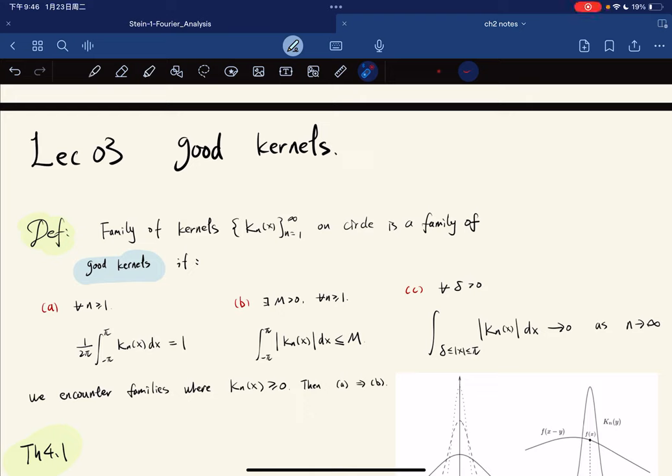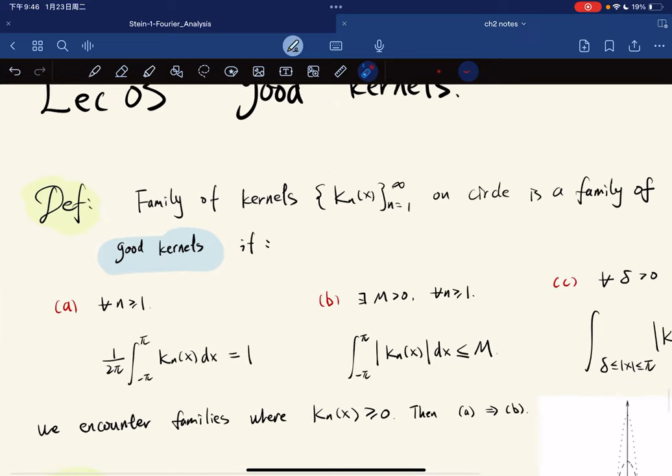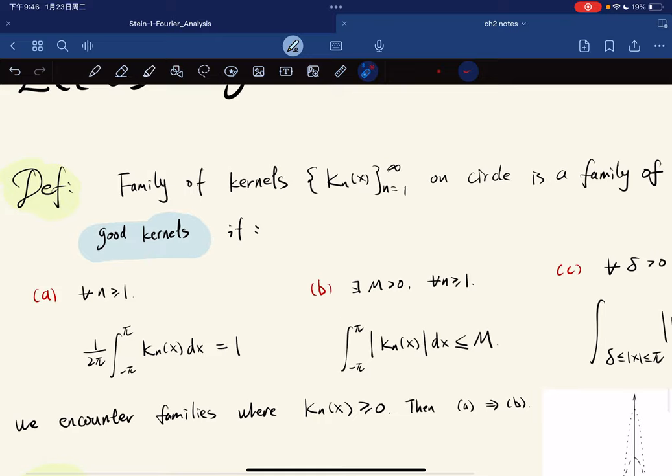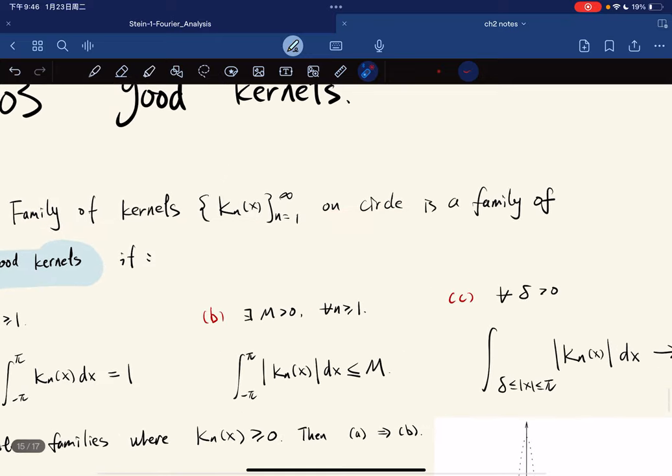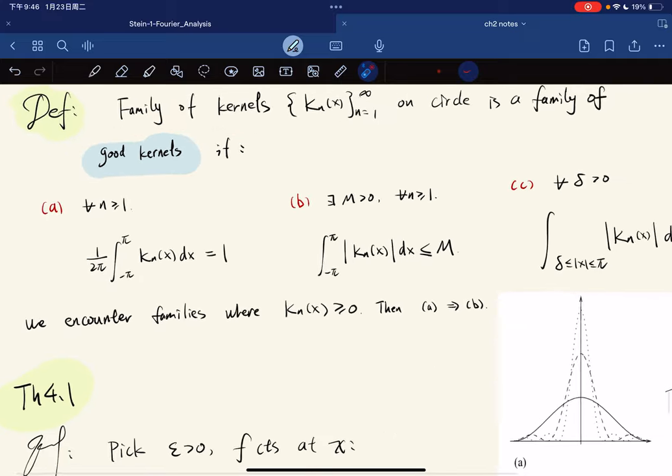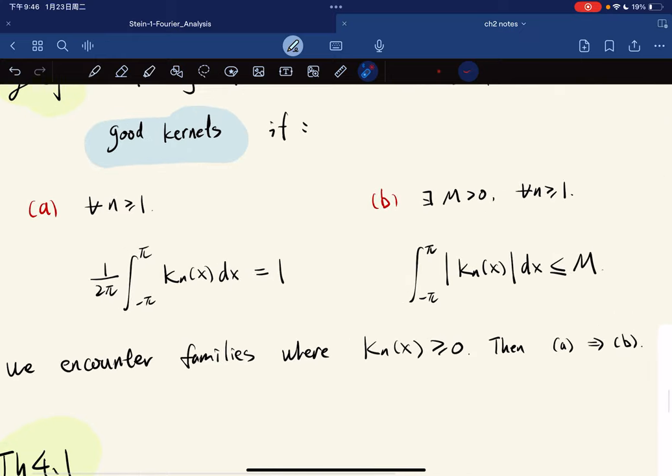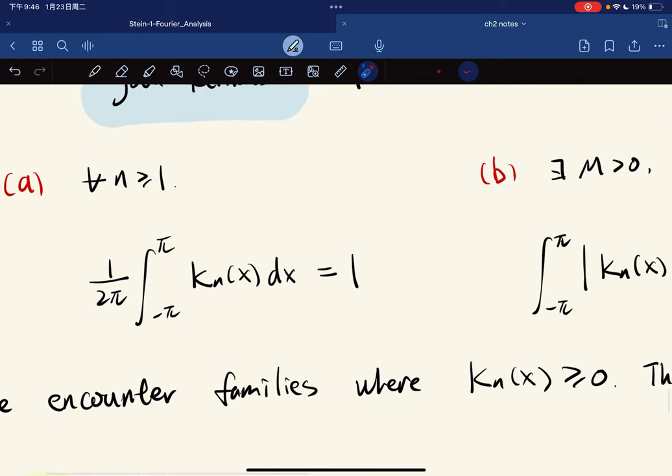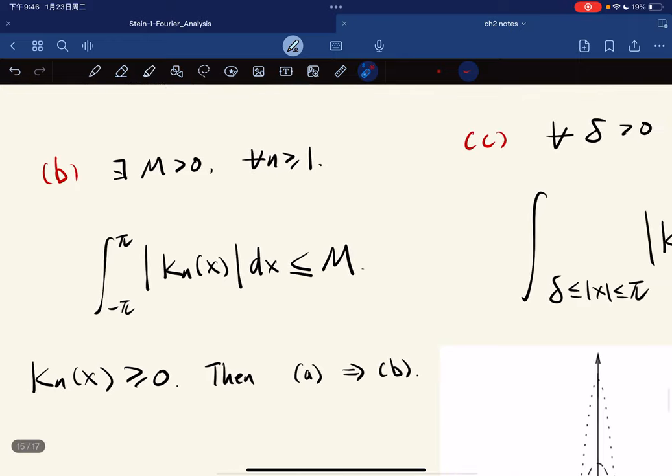Alright, this is our third lecture. We're talking about good kernels. The definition of good kernel is a family of kernels on the circle—a family of functions that satisfy three properties. First, for any n, its integral divided by 2π equals 1. The second property is that it is bounded. There exists a bound such that for all of them we have this bound.